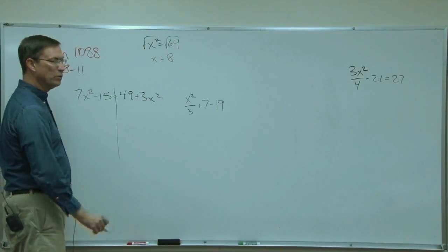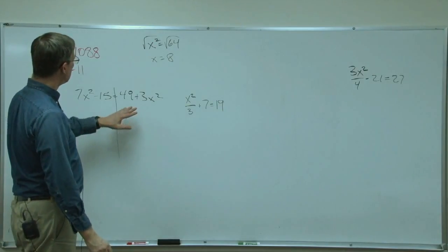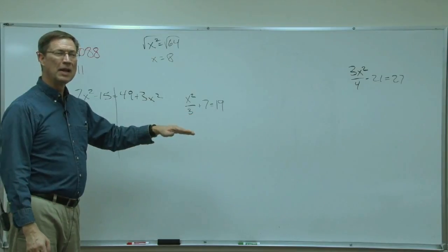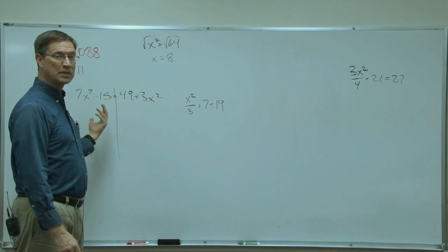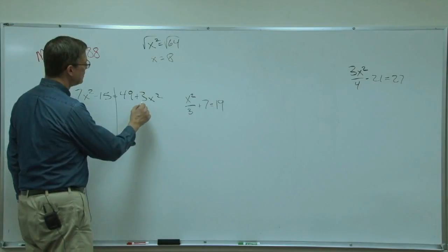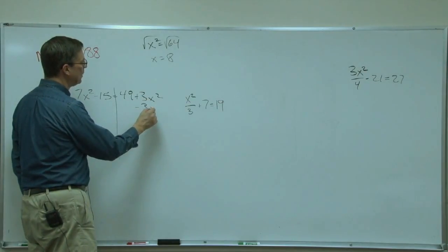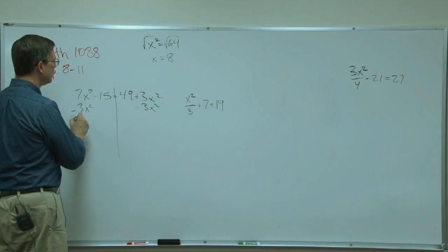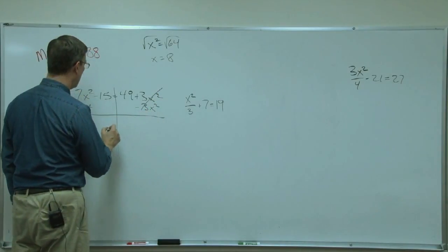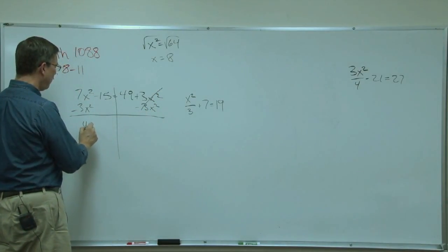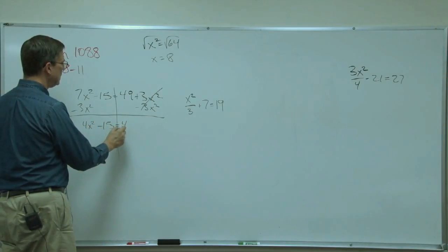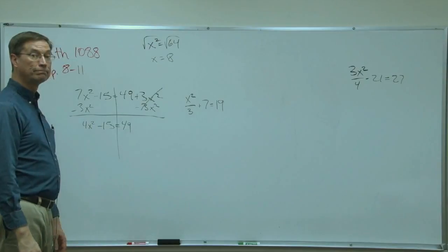I'm going to draw a line through the equals. And first thing I want to do is get rid of the x squared term on the right. I want to have both of them on the same side of the equation. So since I have plus 3x squared, I want to get rid of it by subtracting 3x squared. So that's gone. And this would give me 4x squared minus 15 equals 49.